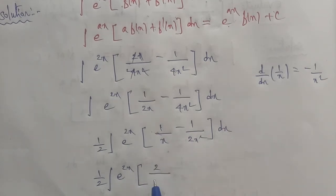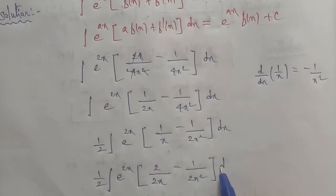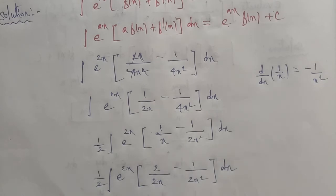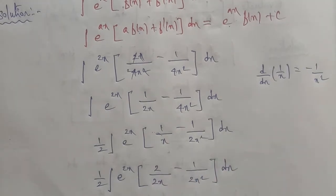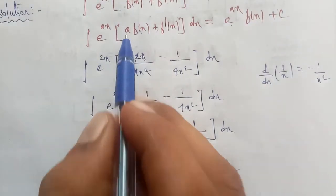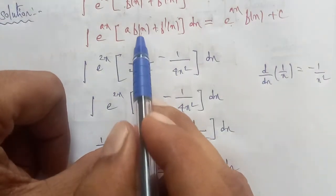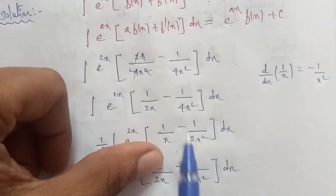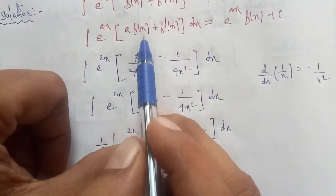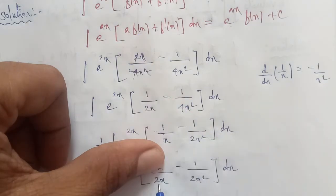Formula-wise, we identify f of x as 1 by 2x. Using the integral formula with f of x equal to 1 by 2x, we apply the result: the integral of e power 2x times [f(x) + f'(x)] equals e power 2x times f(x).